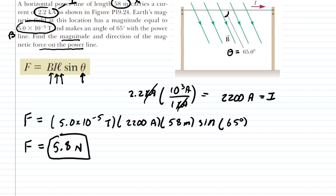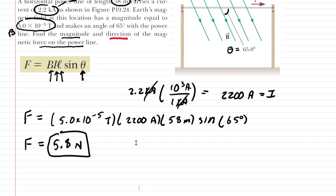That's the correct answer to the first part of the question. But we also need the direction of this magnetic force that is acting on that current-carrying power line. So to find the direction, we're going to apply a right-hand rule. So let's go ahead and set that up.